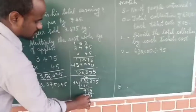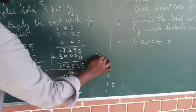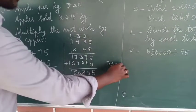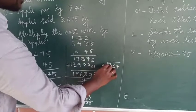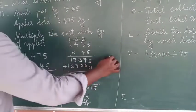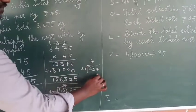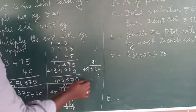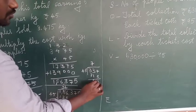Bring the next digit down — that is 7, giving 337. How many 45s are in 337? There are 7. Seven fives are 35, remainder 3. Seven fours are 28, plus 3 is 31. Remainder is 22. Bring the last digit down — that is 5, giving 225.